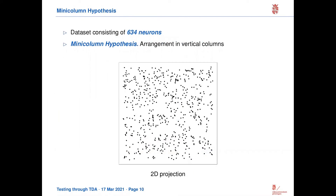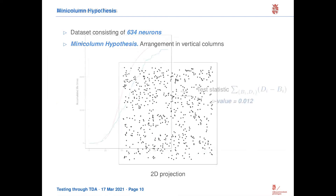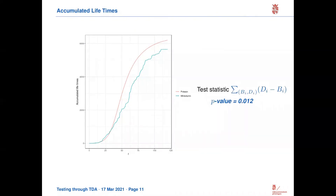Finally, to walk you through a specific example, here's an example from neuroscience: the mini-column hypothesis, where we hypothesize that the neurons arrange in certain columns. If we project these columns into two-dimensional space, we would expect to have certain clusters. The question is, do we see certain clusters here, or is it complete spatial randomness? Looking just at the persistence diagrams would not give us such a big insight, but if we compute certain summary statistics such as the accumulated lifetimes or the total persistence, then using asymptotic Gaussianity, we can derive a p-value. In this case, at the 5% significance level, we would say we do not have complete spatial randomness, but maybe there might be some clustering.